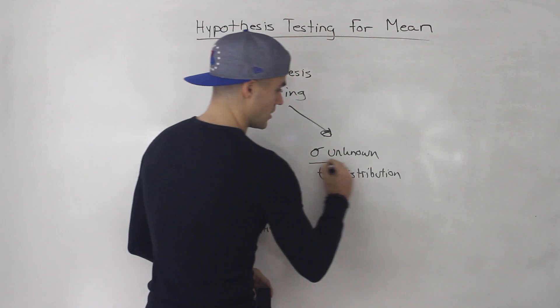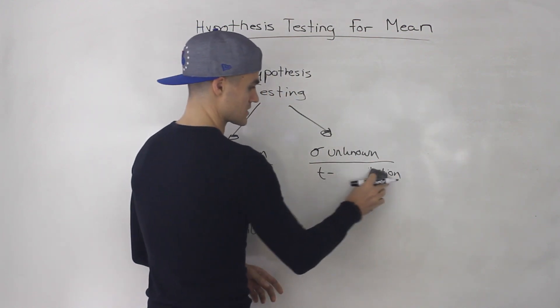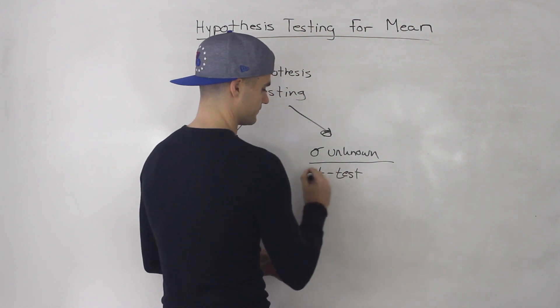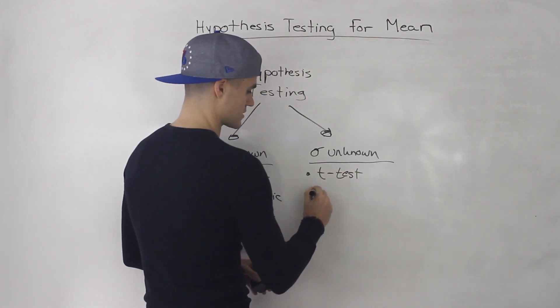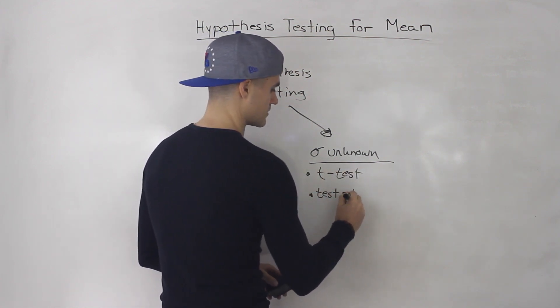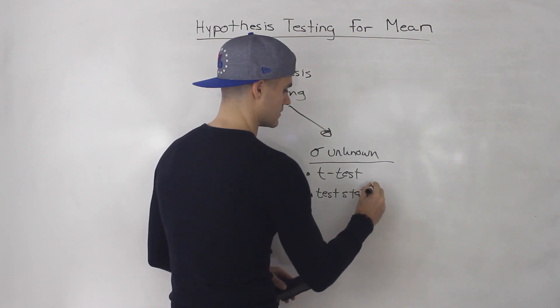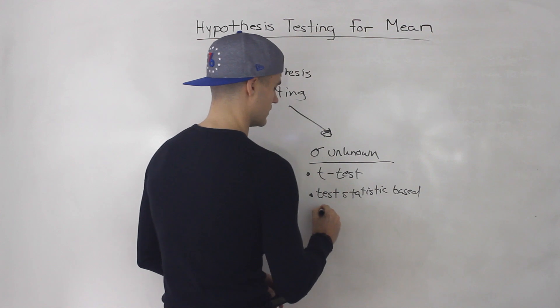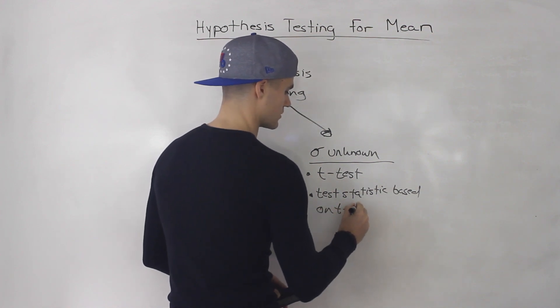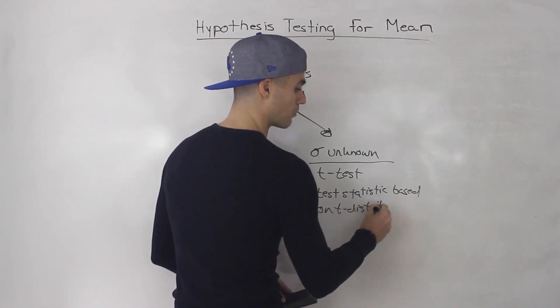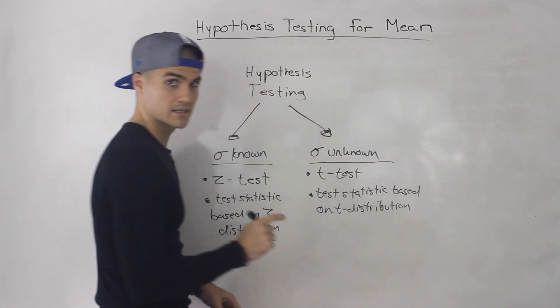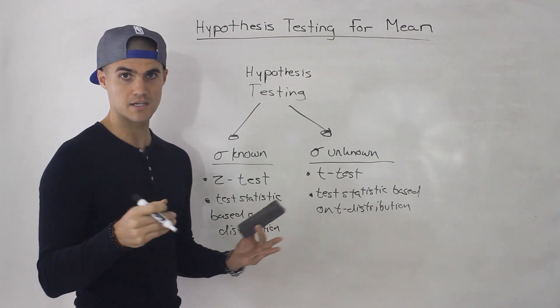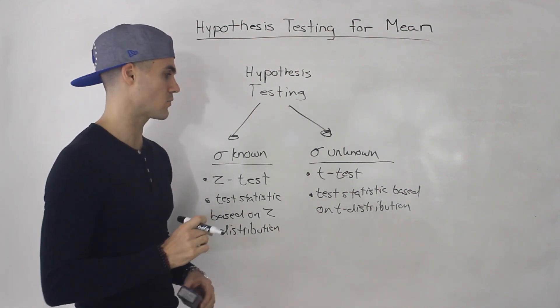And then if it's unknown, if the population standard deviation is unknown, then it's called a T test. And so that test statistic is based on a T distribution. And remember, there are multiple T distributions. It's going to depend on the degrees of freedom. And the degrees of freedom depends on the sample size, it's actually the sample size minus one.